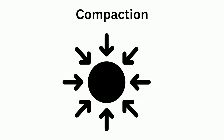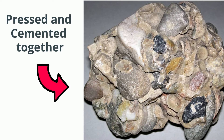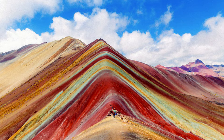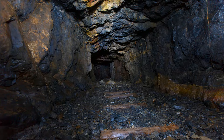And C is cementation, where the sediments are glued and pressed together into a rock. Some examples of sedimentary rocks include this mudstone cliff, rainbow mountain, limestone cliffs, and even coal deposits.